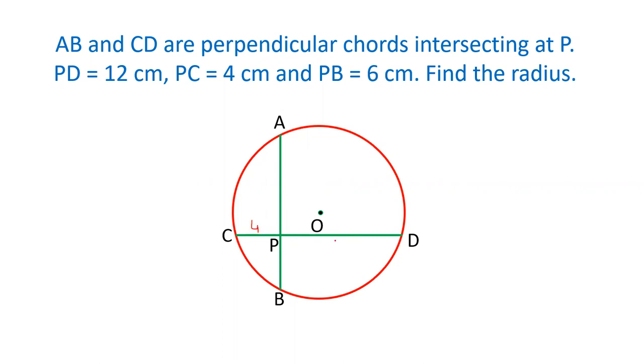PC is given as 4, PD is given as 12, PB is given as 6. We have to find out the radius of the circle. Let's see how we can solve this question.